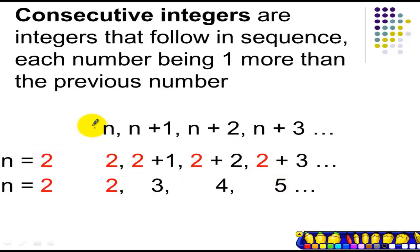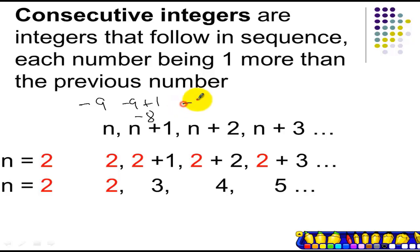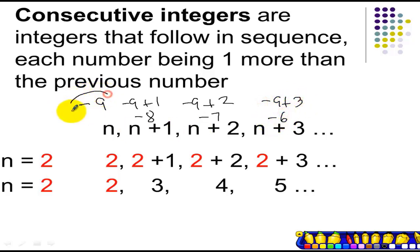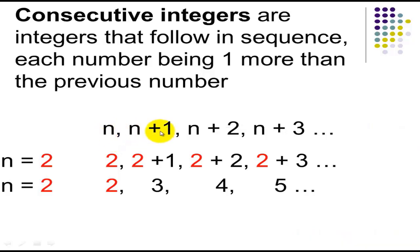If your integer is negative 9, the next integer will be negative 9 plus 1, which is negative 8; negative 9 plus 2, which is negative 7; negative 9 plus 3 is negative 6. So negative 9, negative 8, negative 7, negative 6 will be your consecutive integers. So n, n plus 1, n plus 2, n plus 3, and so on will be the expression we use to represent consecutive integers.